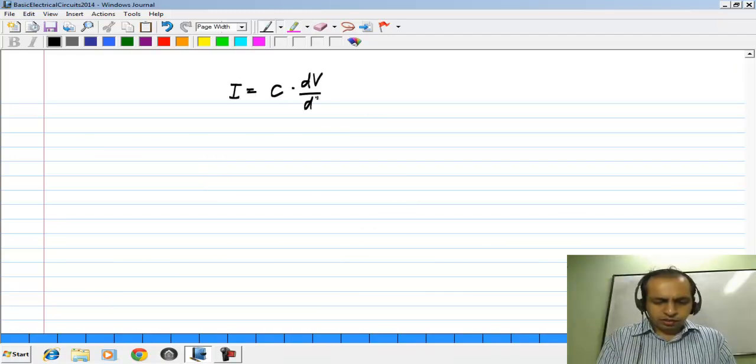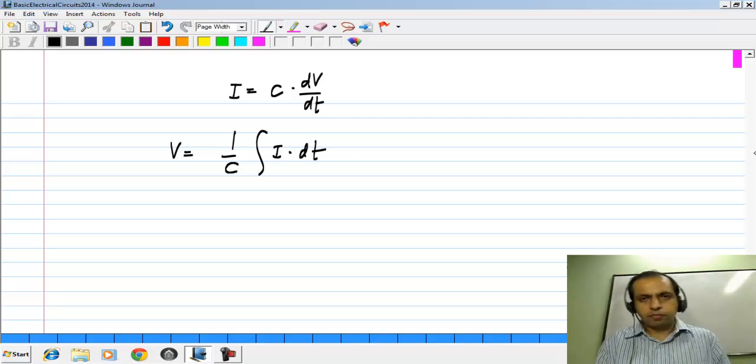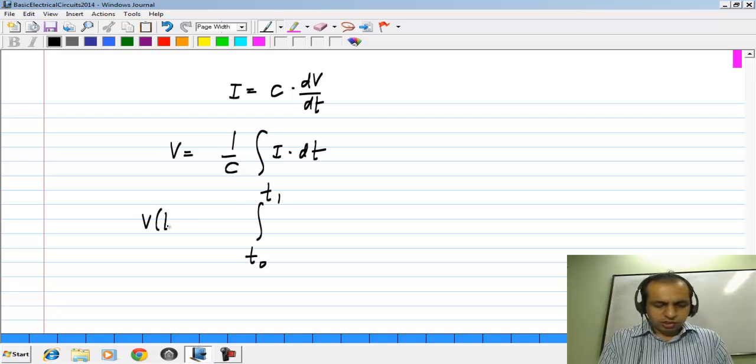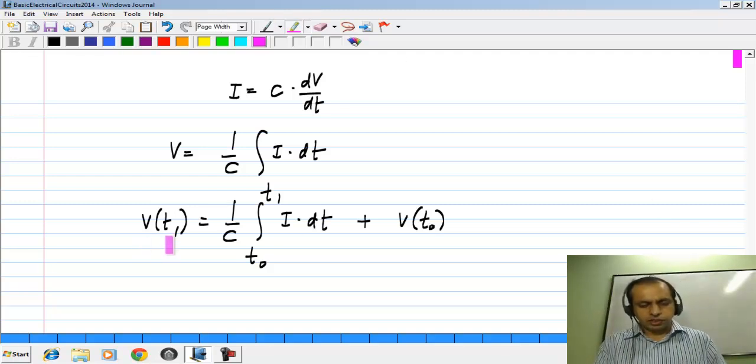I is given by C dV by dt, and if you invert this, we will get the voltage to be 1 over C integral I dt. If I carry out the integral from some T naught to T1, what it says is V of T1 is 1 over C integral I dt plus V of T0. That is, the change in the voltage between T0 and T1 is the integral of the current, which is the charge accumulated between T0 and T1 divided by the capacitance C.